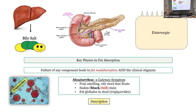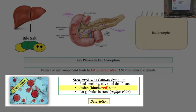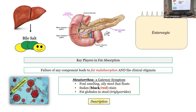You can stain the stool for fat. A Sudan black or Sudan red stain will identify fat globules in the stool — actual triglycerides. You can get a qualitative stool smear for Sudan black, and if fat globules are present, you can ultimately do a quantitative stool collection down the road.